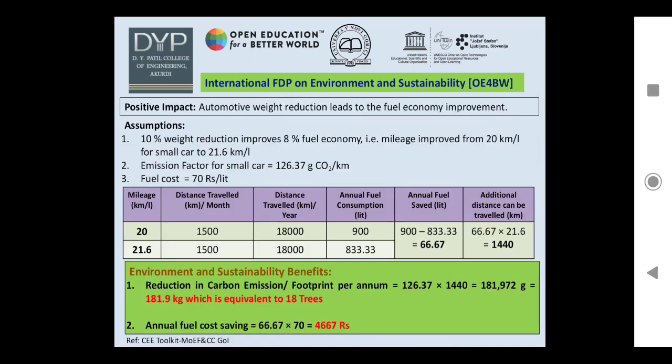The positive impact of automotive weight reduction leads to fuel economy improvement. Assumptions for calculating carbon emission reduction: a 10% weight reduction improves fuel economy by 8%, improving mileage from 20 km/litre to 21.6 km/litre for a small car. The emission factor for a small car is 126.37 g CO₂ per kilometer, and the average fuel cost in India is assumed to be ₹70 per litre.